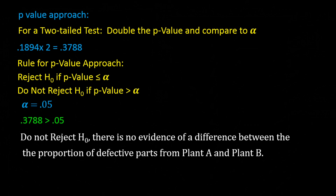Notice that the p-value approach gives the same result as the critical value approach, because we are really doing the same thing using a slightly different approach to decide whether the test statistic provides enough evidence to reject the null hypothesis. The methodology shown in this tutorial works for both proportions and means in very much the same way, and for both one population and when comparing two populations, because the fundamental principles of hypothesis testing are the same. If you are still unclear, go back and review the introductory tutorial on hypothesis testing for one mean.